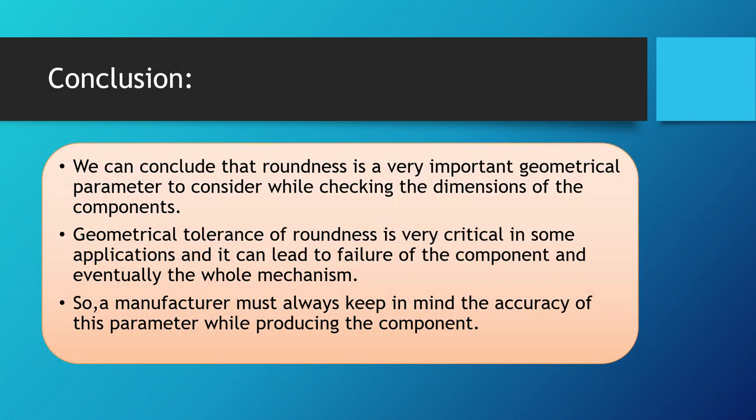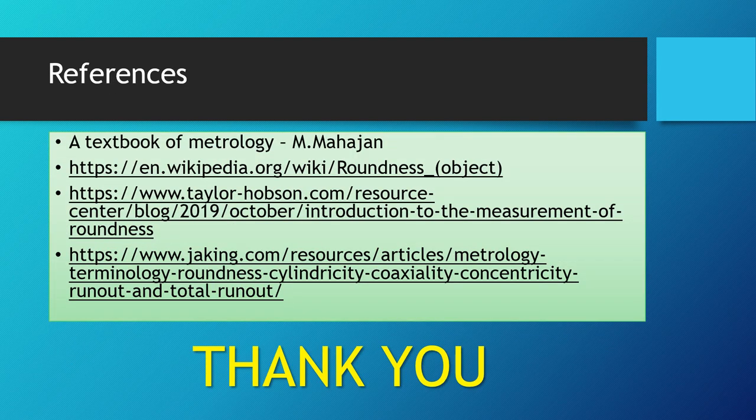In conclusion, roundness is a very important geometrical parameter to consider when checking the dimensions of a component. Geometrical tolerance of roundness is critical in some applications and can lead to component failure and eventually failure of the whole mechanism if accuracy is not maintained. Manufacturers must always keep precision in mind and ensure maximum accuracy of this parameter to ensure smooth functioning. All references used for this presentation are provided, and thank you for watching.